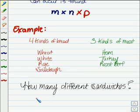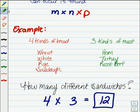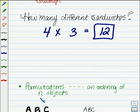Whether you listed out the different sandwiches you could have or you were able to calculate four different kinds of bread, three different kinds of meat, when you write those out you should have 12 different sandwiches. Four times three. Now that's using the fundamental counting principle.